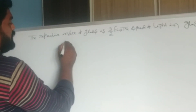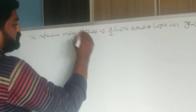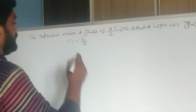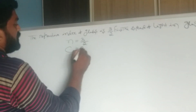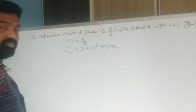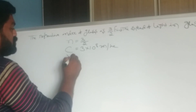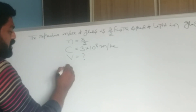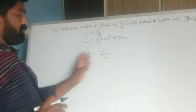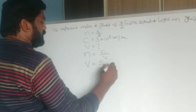Here the refractive index of glass n is given, that is 3/2. We know the speed of light in vacuum, which is 3 × 10⁸ meters per second. Now we can find the speed of light in glass, that is V. Using the formula n = C/V, we get V = C/n.